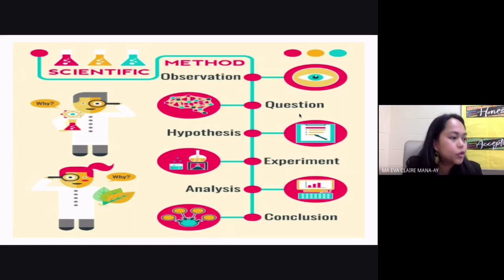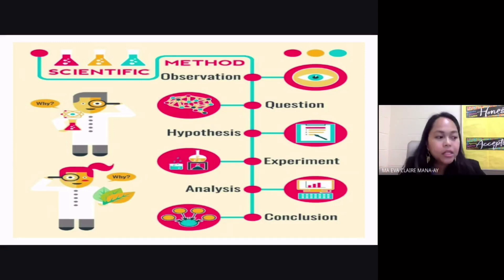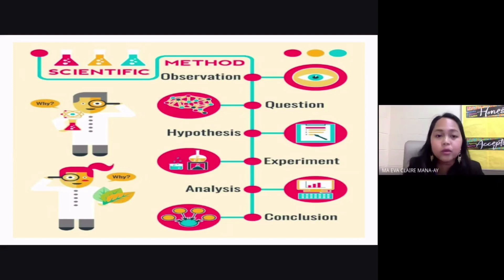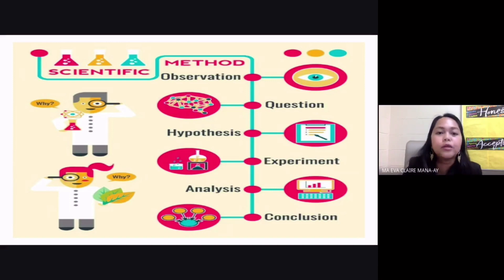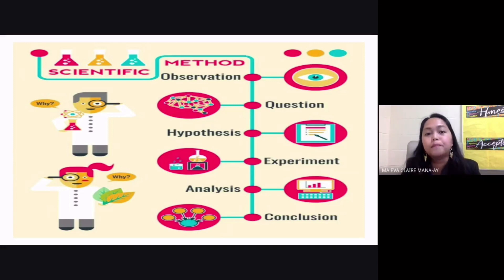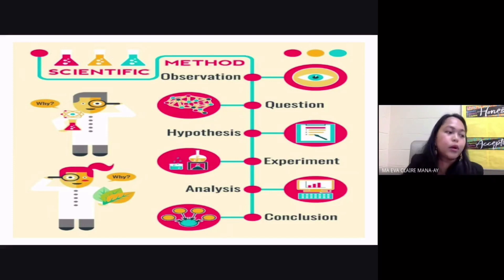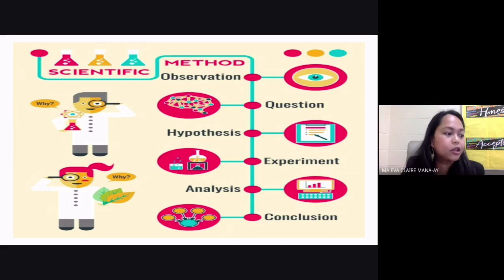There is another term closely related to observation, and that term is inference. The difference between observation and inference is that when you observe, these are the things you get from your environment using your five senses. When you say inference, these are opinions that you form based on what you have observed.